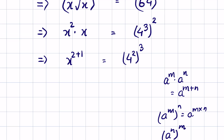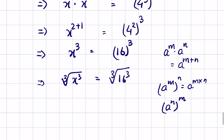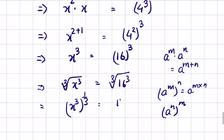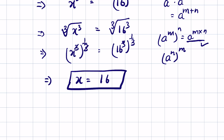So x raised to the power 3 is equal to 16 raised to the power 3. Now taking the cube root of both sides: cube root of x cubed equals cube root of 16 cubed, which means x cube raised to the power 1 upon 3 equals 16 cubed raised to the power 1 upon 3. Using the identity, the 3s cancel on both sides, giving x is equal to 16. Like and subscribe, thanks for watching.